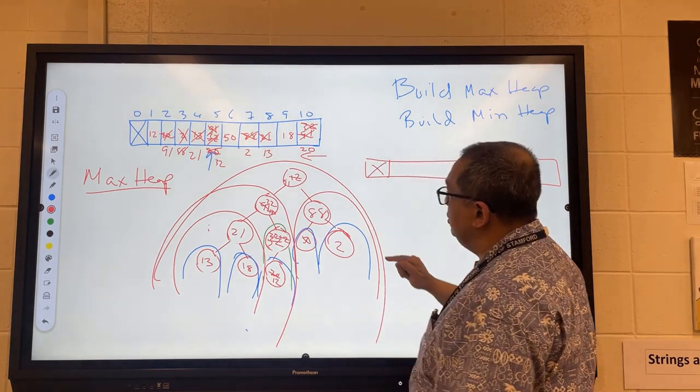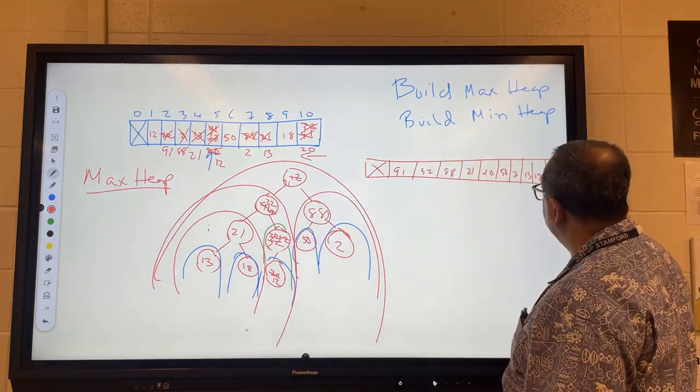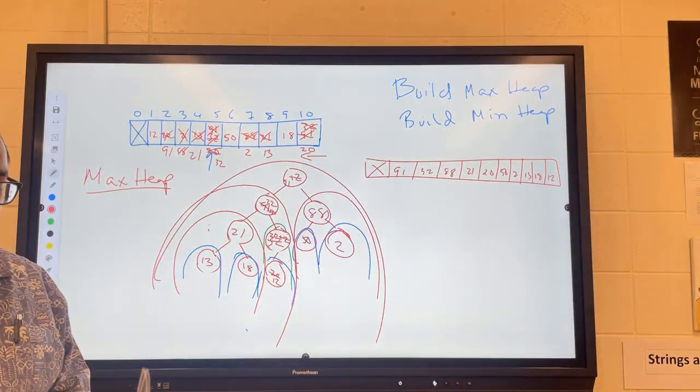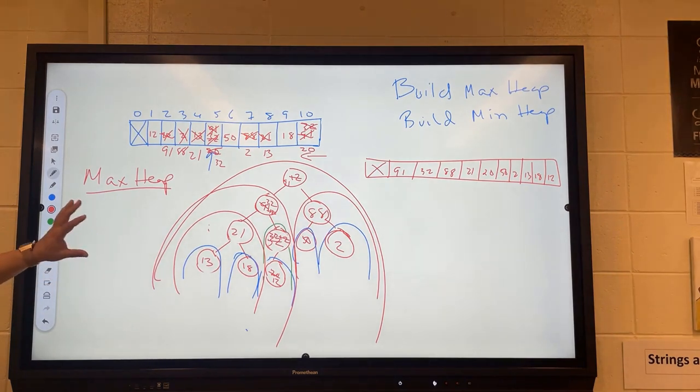And I need to make the corresponding changes up here so that my final array looks like this. The first item is still not used. And I have the 91 and 12. Let me just check to see if I did that all right. So that is the process.